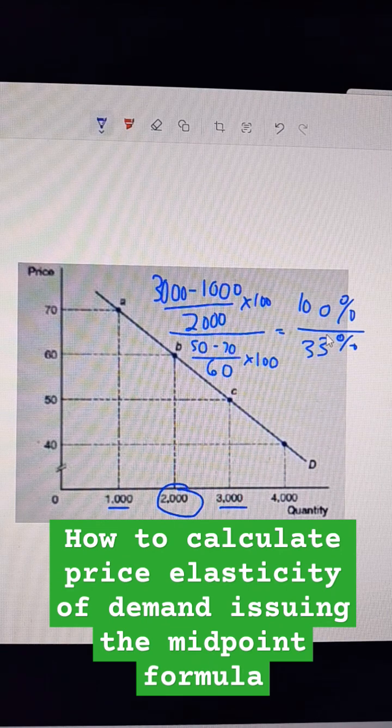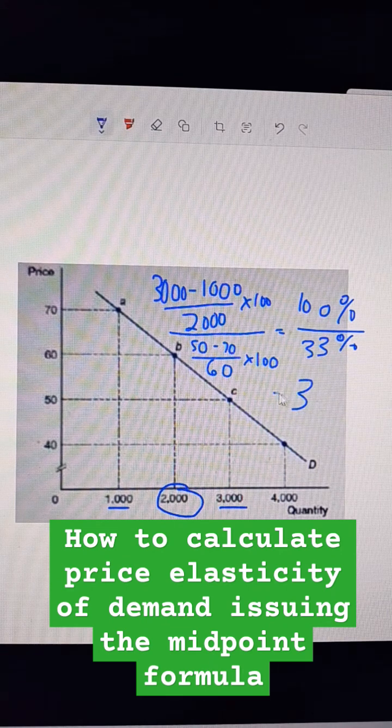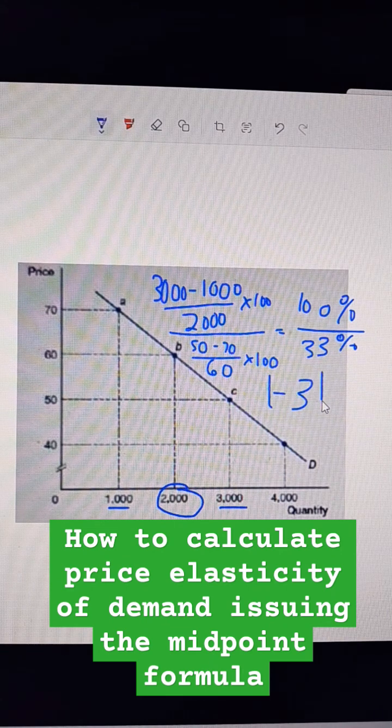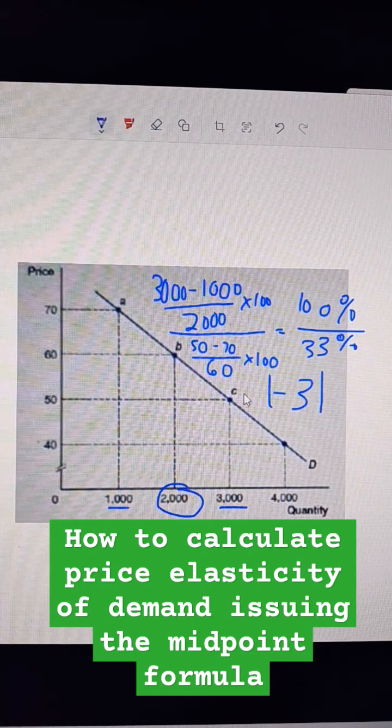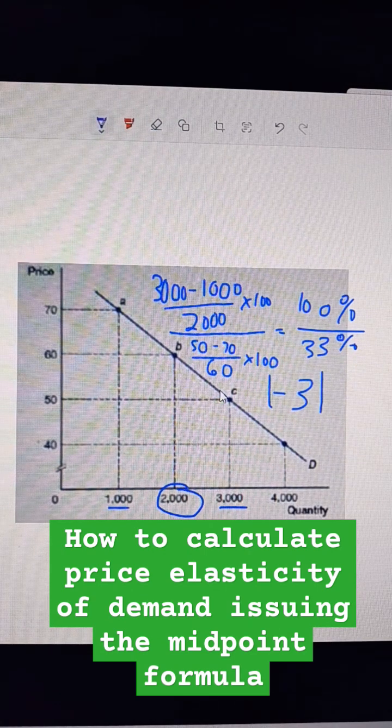And this means that the elasticity is 3. It's really negative 3, but we'll usually say that in absolute terms. So that's how to use the midpoint method to calculate elasticity of demand from a demand curve.